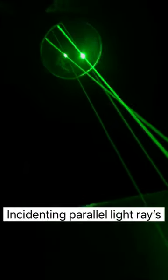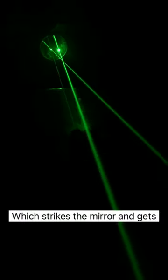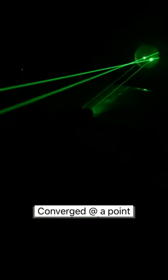Here we have two laser torches producing two parallel light rays, which strike the mirror and converge at a point on the principal axis. This is called the principal focus.